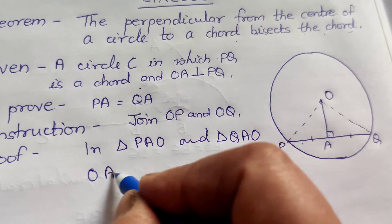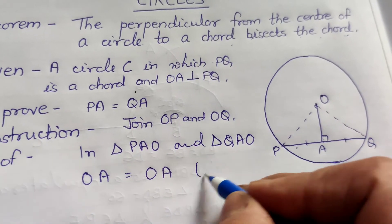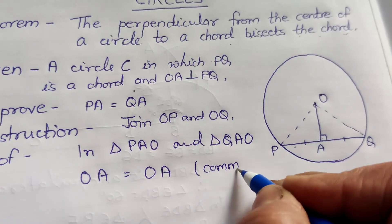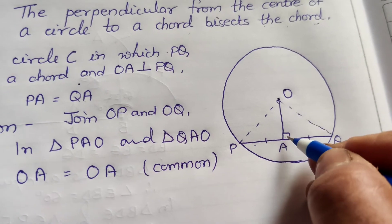Sabse pahele to dikhha hai, OA equal to OA. Duna triangles me kya hai? Common. OA equal to OA common hai.